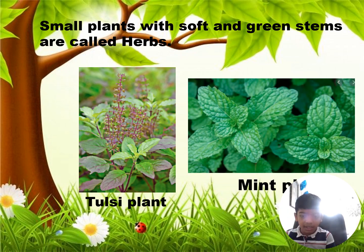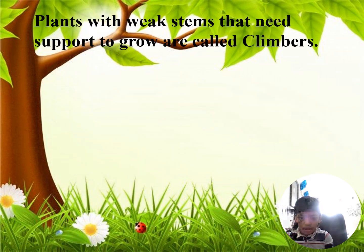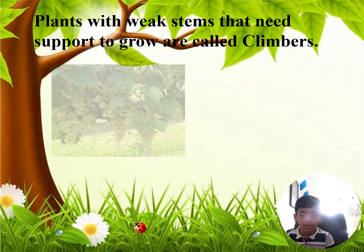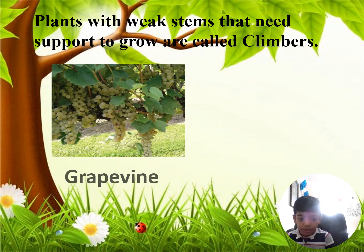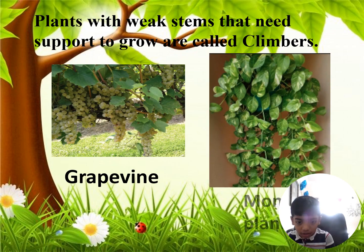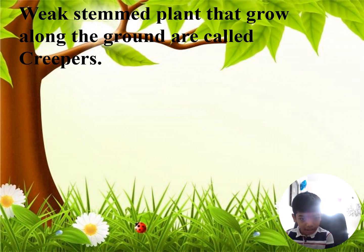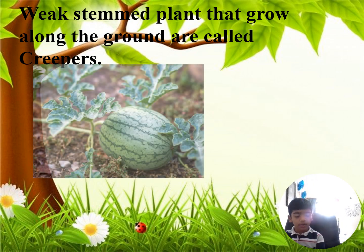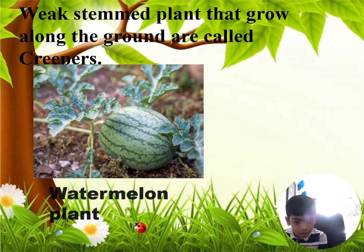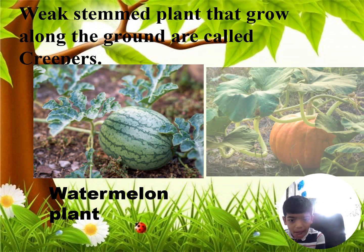Plants with weak stems that need support to grow are called climbers, like grapes and the money plant. Weak-stemmed plants that grow along the ground are called creepers, like the watermelon plant and pumpkin plant.